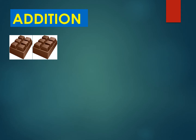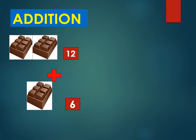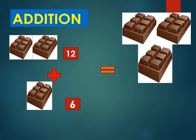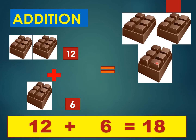Suppose your mother gives you two bars of chocolates, and if you count the number of tablets on both the bars, it is twelve. Your friend gives you one more bar of chocolate with six more tablets. How many tablets do you have in all? You will start counting after twelve: thirteen, fourteen, fifteen, sixteen, seventeen, and eighteen. So the sum is eighteen. Twelve plus six is equal to eighteen.